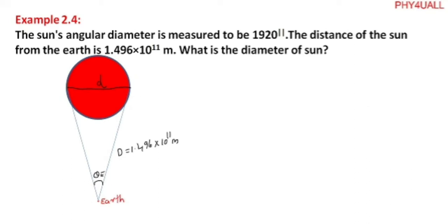The angular diameter, say it as theta, is given as 1920 seconds. From the earth towards the sun, the distance is very large, so we can consider the formula here.